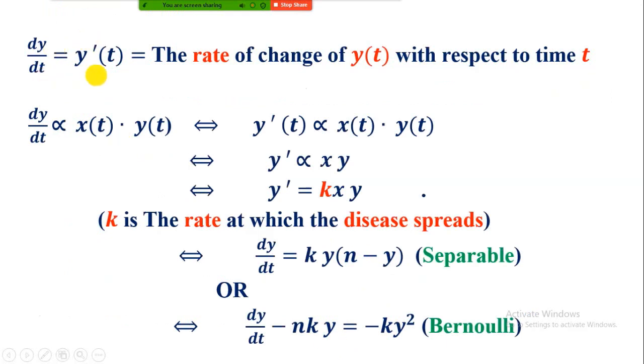The derivative of y with respect to t represents the rate of change of number of infected people with respect to time. This rate of change is directly proportional to the number of interactions between infected and non-infected people. If the interactions increase, the number of infected people also increases.